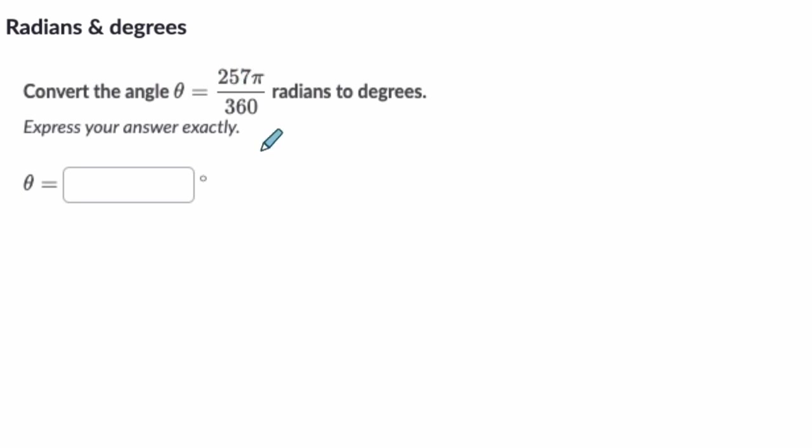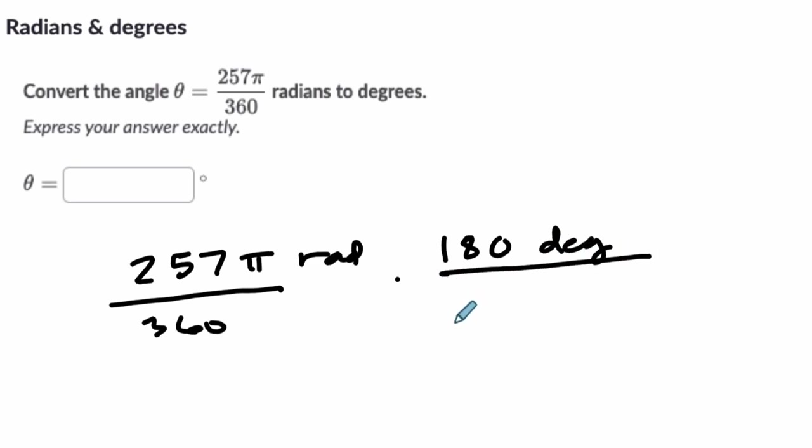One more. We get 257 pi radians over 360 to degrees. So we want to cancel out the radians. So it's 180 degrees over pi radians. So look what happens here. The pi is typically canceled. If there is no pi here, it's okay, that won't cancel. The radians will cancel, and what's left is a measurement in degrees. So it's 257 times 180 over 360. Try that out. You should get 128.5 degrees.